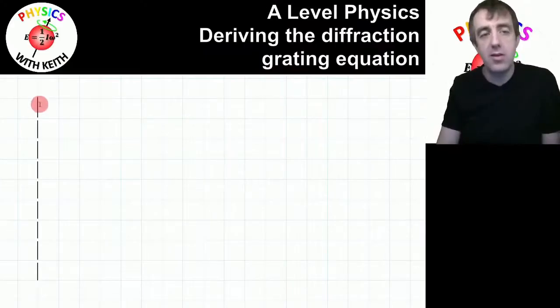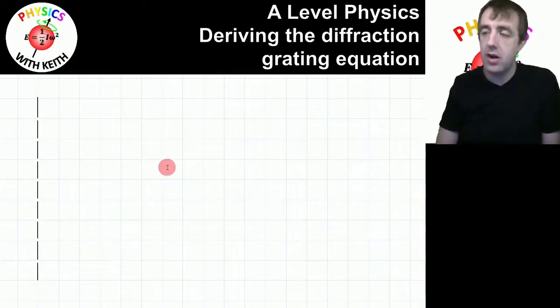First of all, let's suppose we have a diffraction grating, which I'm representing as this vertical line with slits in it. And this diffraction grating is illuminated with coherent light.